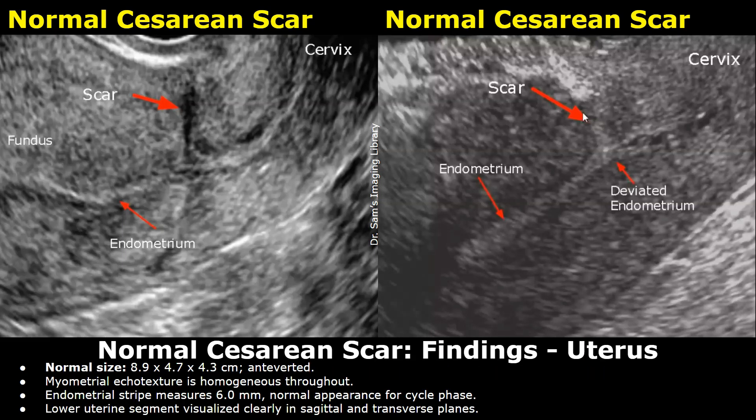Findings of the uterus: normal size, measuring 8.9 x 4.7 x 4.3 cm, anteverted. Myometrial echo texture is homogeneous throughout. Endometrial stripe measures 6 mm, normal appearance for cycle phase. Lower uterine segment visualized clearly in sagittal and transverse planes.